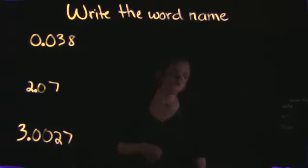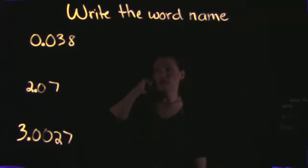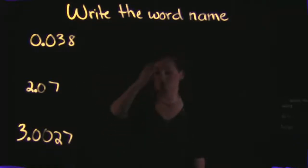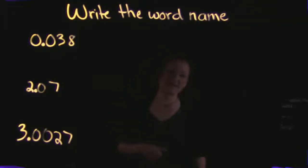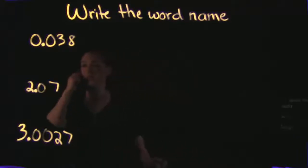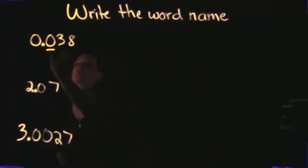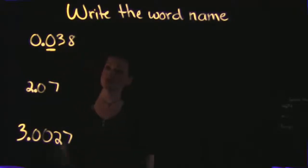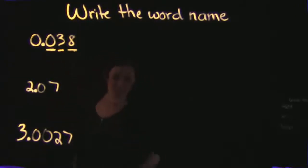In order to write the word name of a decimal, it's very important that you know the place value of the decimal. Taking a look at our first example, we have the decimal 0.038. We need to know the place values of decimals: the spot immediately following the decimal is the tenths spot, followed by the hundredths, then the thousandths, ten thousandths, and so forth.